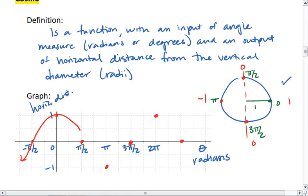This graph is called the cosine wave. And like sine, it repeats as well. It goes in both directions.